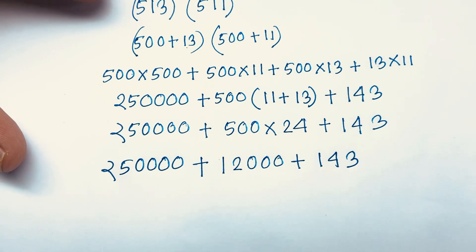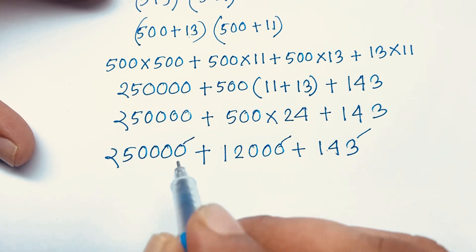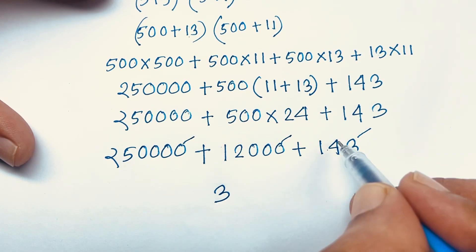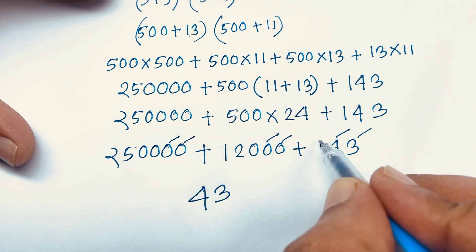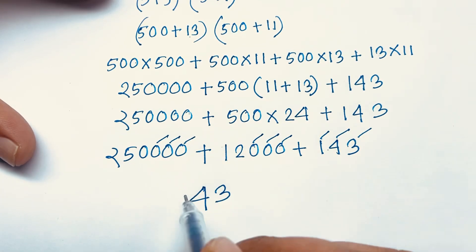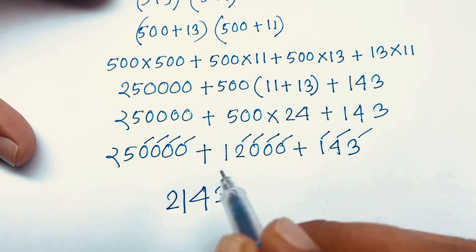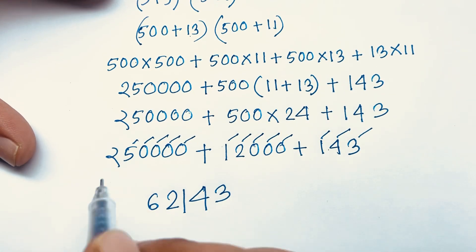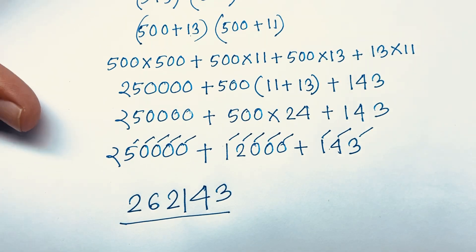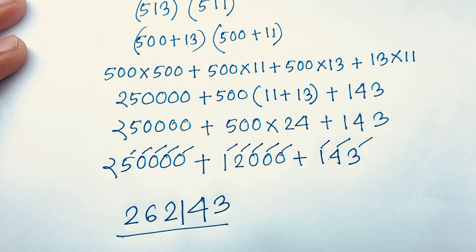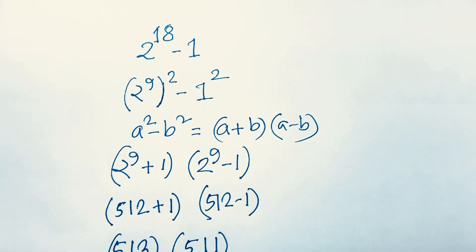Adding these together: 250,000 plus 12,000 plus 143 equals 262,143. This is our final answer to the Japanese Math Olympiad question. Thank you all — if you enjoyed this video please follow my channel for other interesting videos. Goodbye, take care!